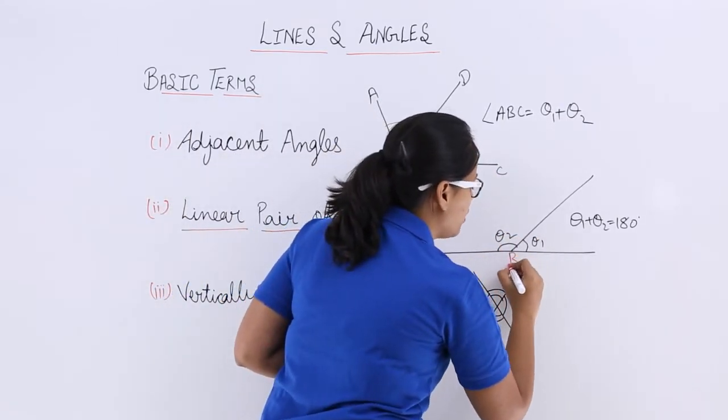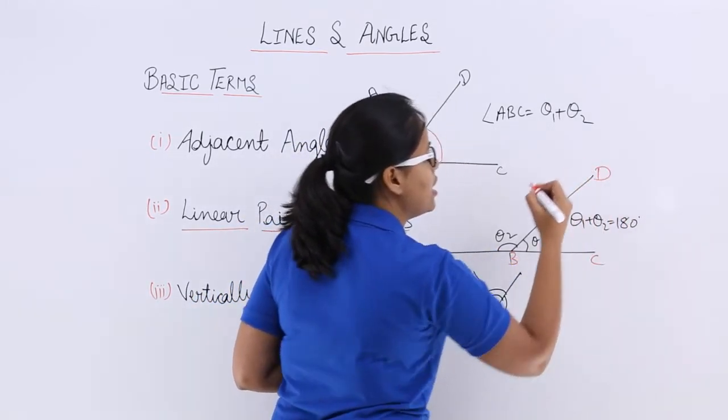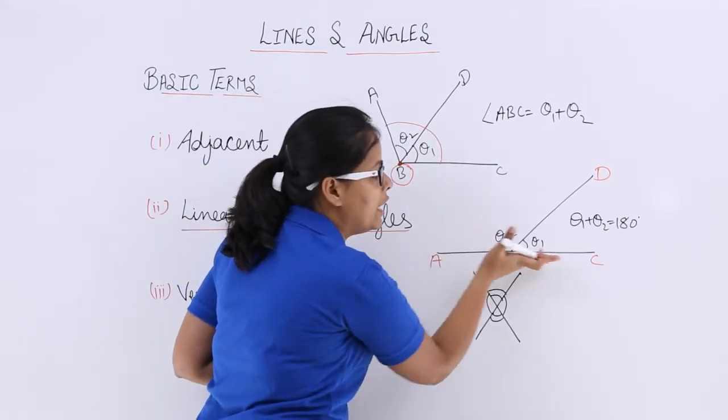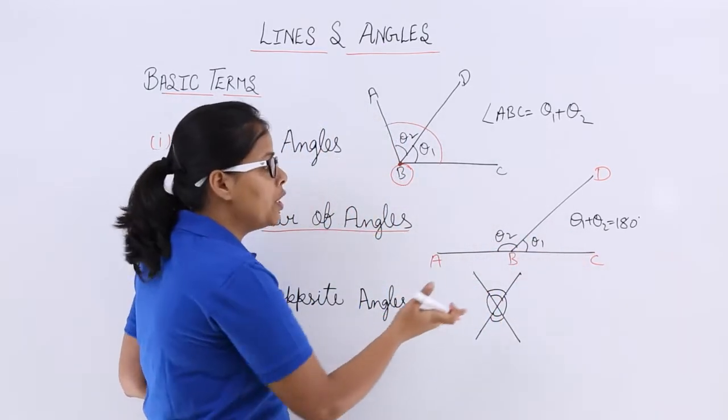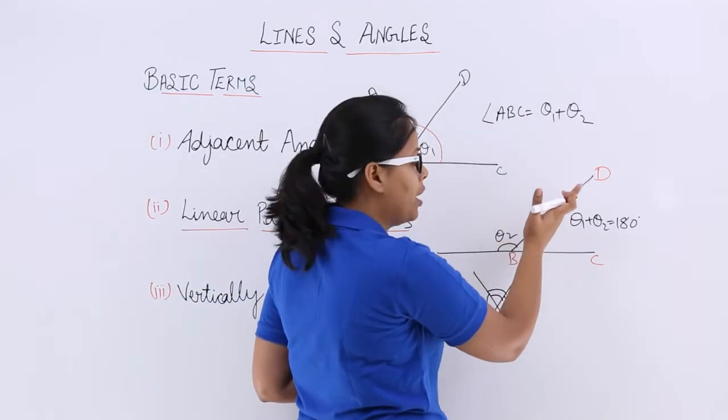This is B, this is A, this is C and this is D. Here AB has been inclined linearly with BC which makes it a line. And this being the common arm here.